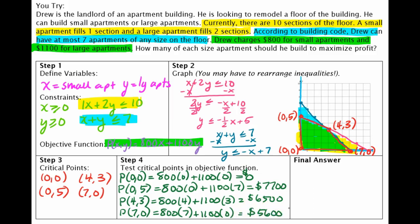So looks to me like our maximum profit would come right here if we rented out zero small apartments and five large apartments. So that would be final answer. You would want zero small apartments and five large apartments.